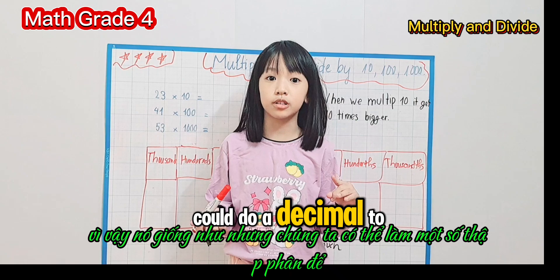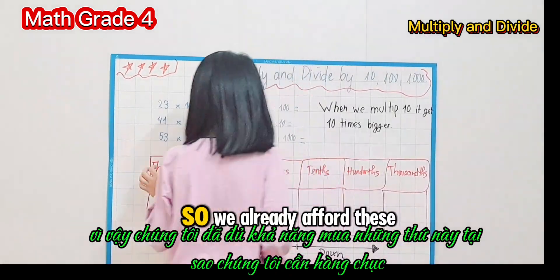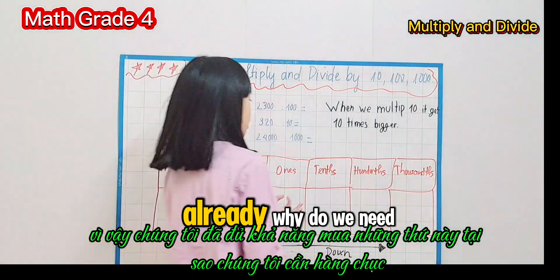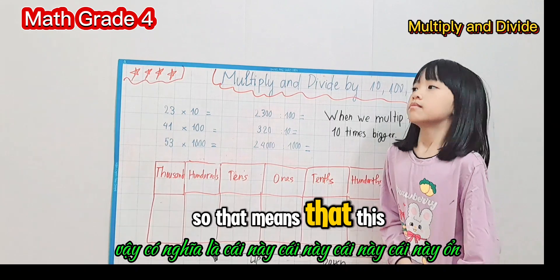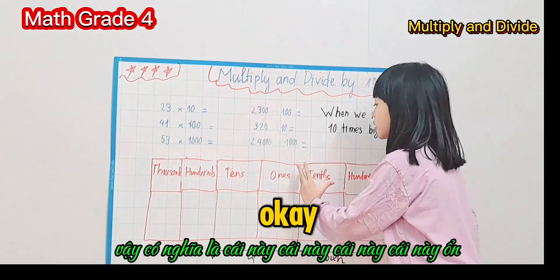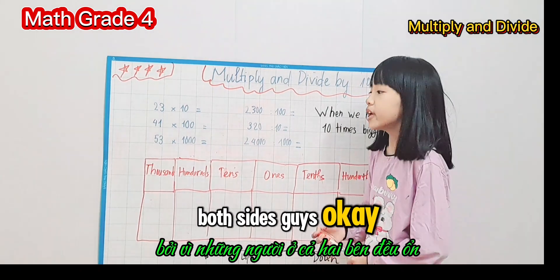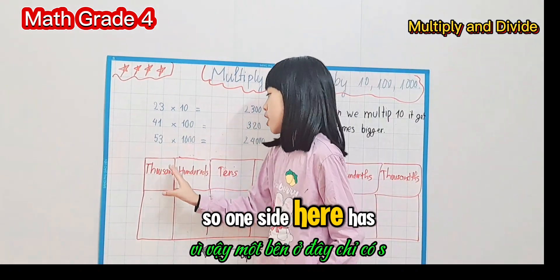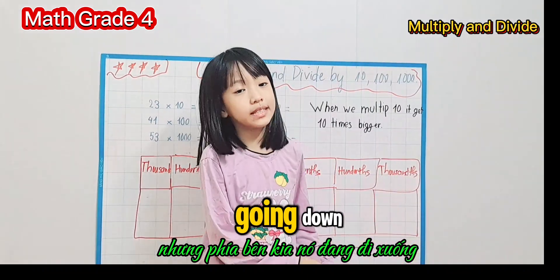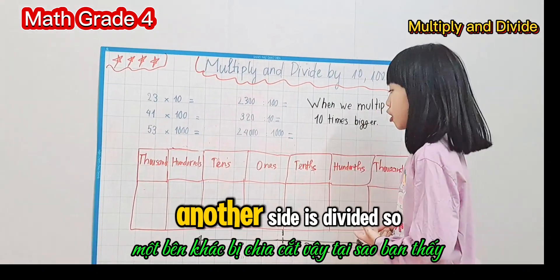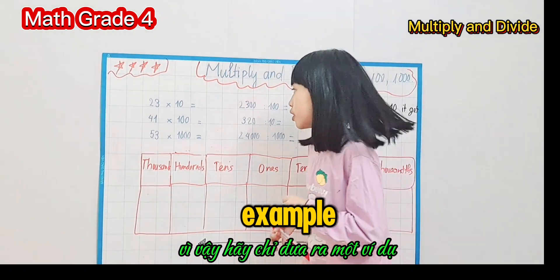We can do decimals too. You may be wondering — we already have four place values, so why do we need tens, hundreds, and thousands with 'th' endings anymore? The ones column sits in the middle on both sides. One side goes up — that means it's multiplying — and the other side goes down — that means it's dividing.